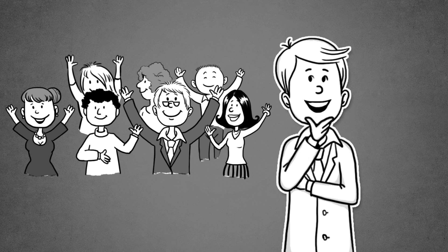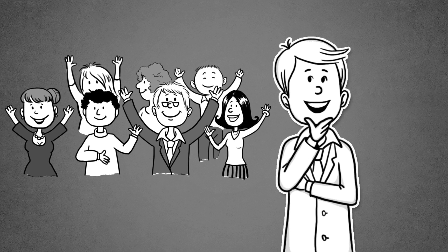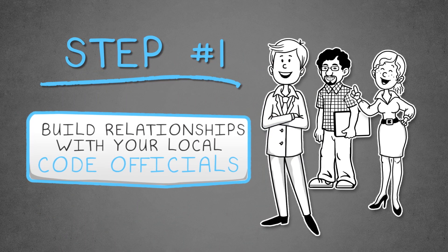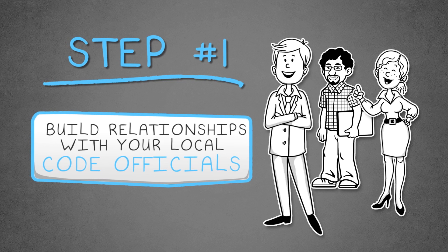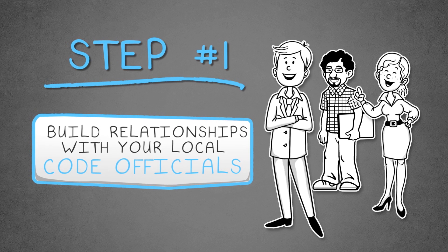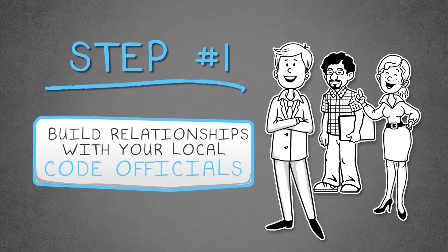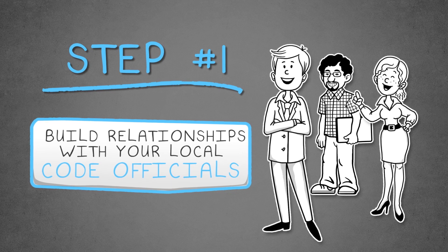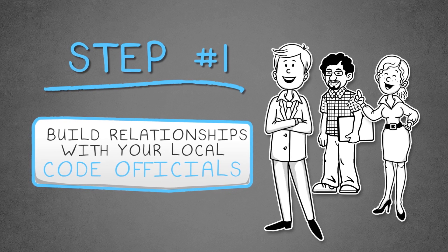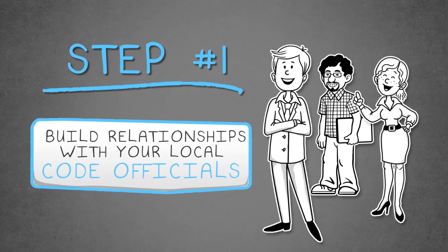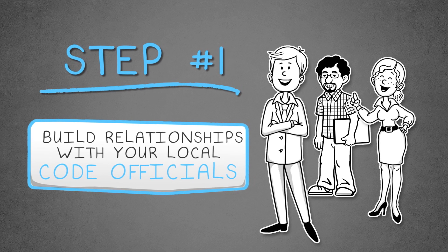NEHB needs you to get involved, and here's how. Step 1: Start building or rebuilding relationships with your local code official, like Jim. By developing a professional working relationship with people like Jim, you will begin building the foundation for working together later on.